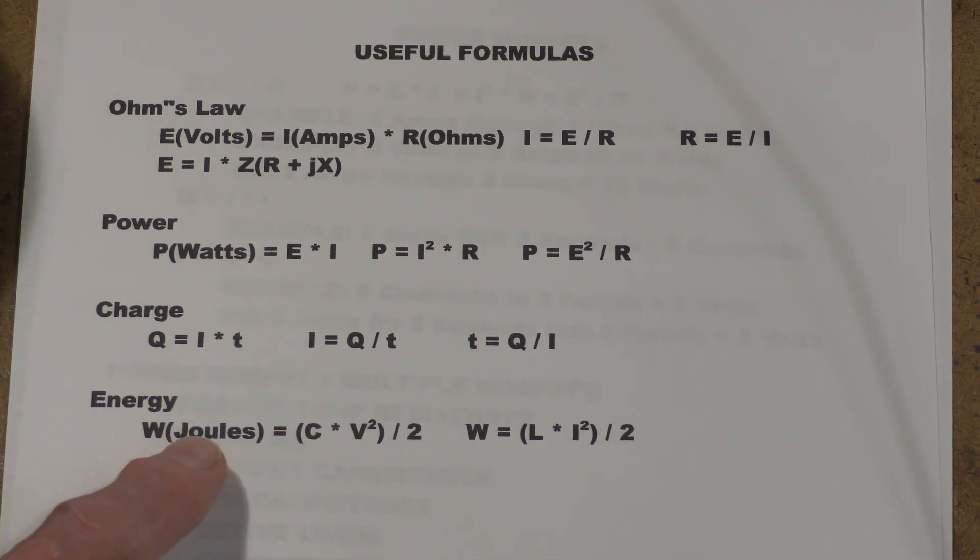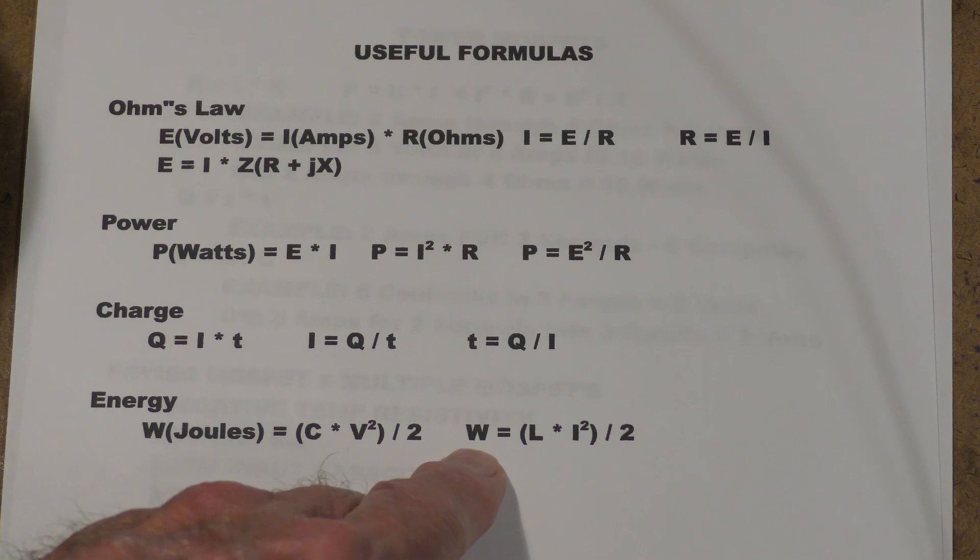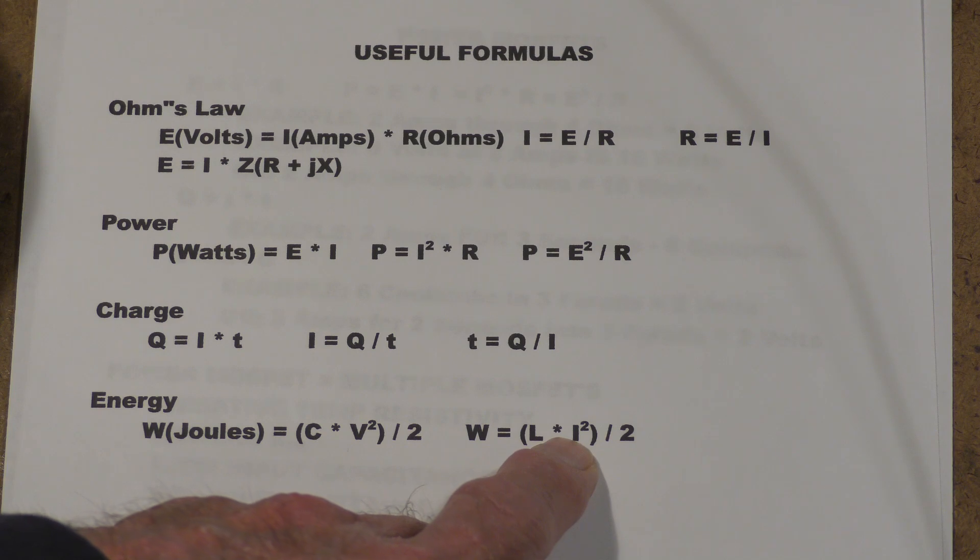Finally, there are two useful formulas for energy, one in a capacitor and one in an inductor. In the capacitor, the energy in joules is just the capacitance in farads times the voltage in volts squared, the whole thing divided by two, or one-half CV squared. The energy in an inductor is the inductance multiplied by the square of the current. Once again, the inductance is in henries, the current is in amperes, and then the whole quantity divided by two.